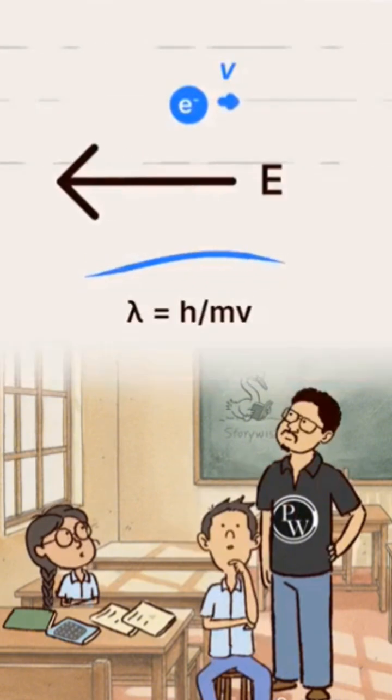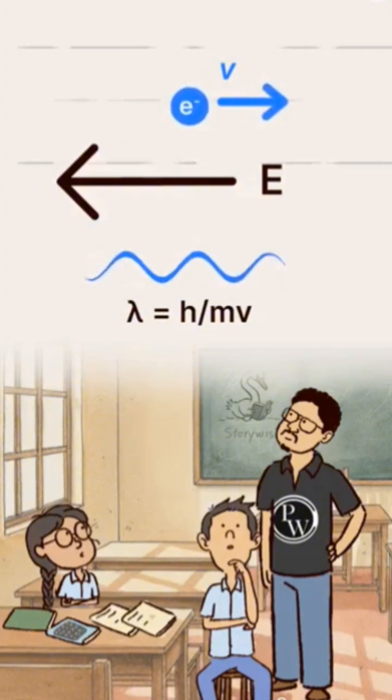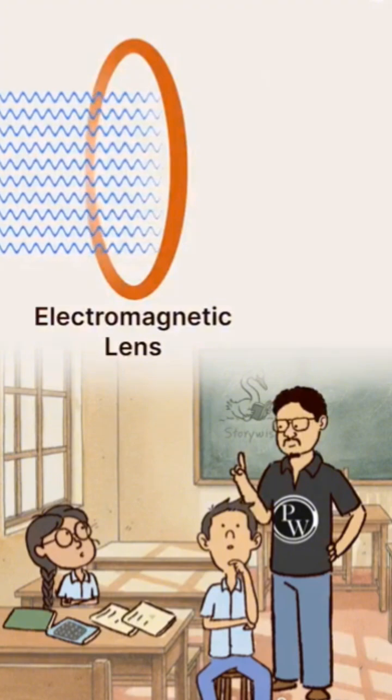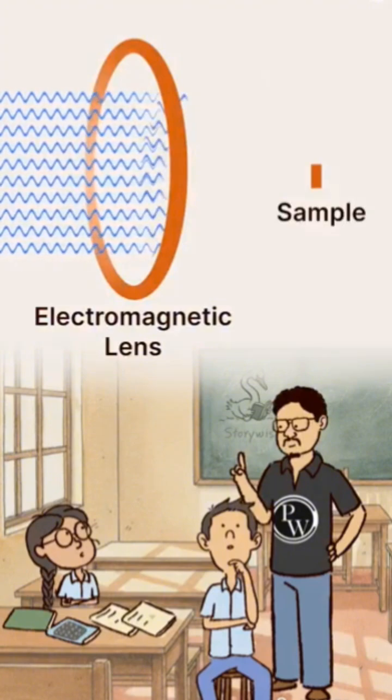Free electrons are subjected to a strong electric field. They are accelerated until they attain a high velocity. Once we have the desired wavelength at that speed, we use electromagnetic lenses to focus it onto a very small area.